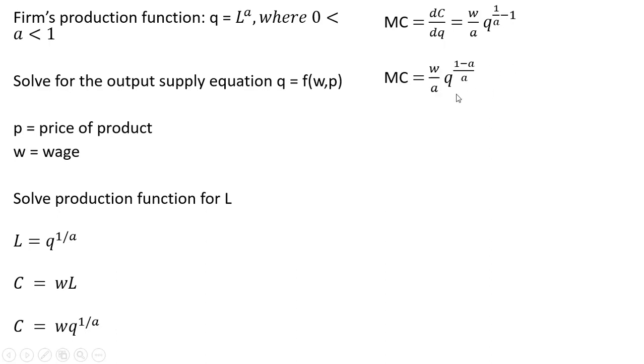Simplifying that up a little bit, the exponent will simplify to the following. So we've got 1 divided by A minus A divided by A. And so just simplifying that, we can write it like this.